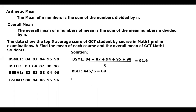Next we have BSBA. BSBA 1 is the sum of 82, 83, 88, 94, and 96. So 82 plus 83 plus 88 plus 94 plus 96 equals 443, divided by 5, and the answer is 88.6. That is the arithmetic mean of BSBA for their top 5 average score in the Math 1 prelim examination.